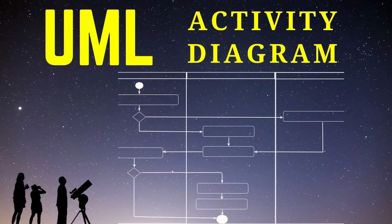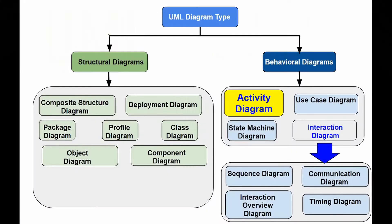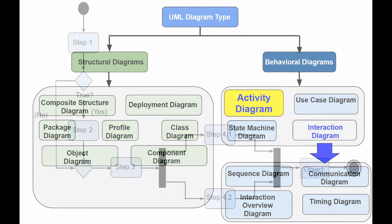AvaCoders. Activity diagram is another important UML behavioral diagram used to describe the dynamic aspects of a system. Activity diagram is essentially an extended version of a flowchart that models the transition from one activity to another, and it shows how system activities are coordinated to provide a service that can be at a different level of abstraction.